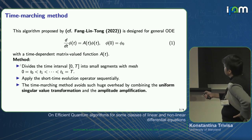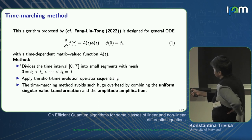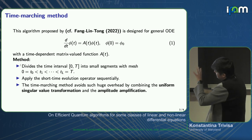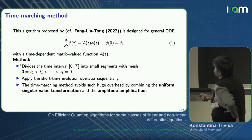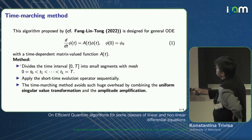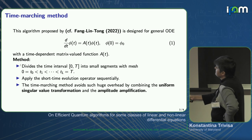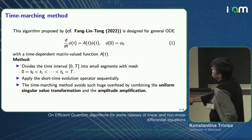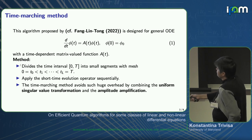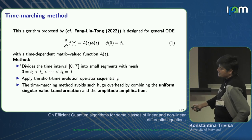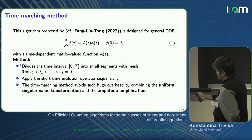The time-marching method was illustrated very successfully by Di yesterday. The algorithm we use is the one proposed by Fang, Lin, and Tong, designed for general ODEs with a time-dependent matrix-valued function A(t). The method involves appropriate discretization, dividing time into small intervals, and applying short-time evolution operators sequentially. The time-marching method avoids huge overhead by combining uniform singular value transformation and amplitude amplification.